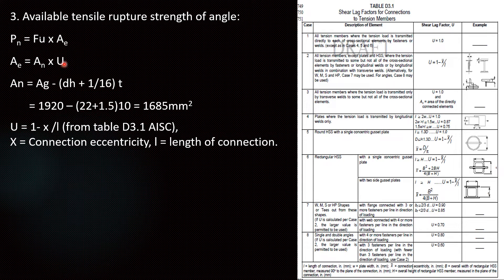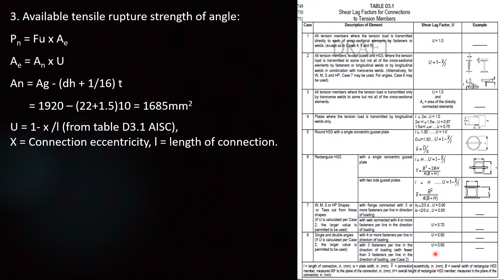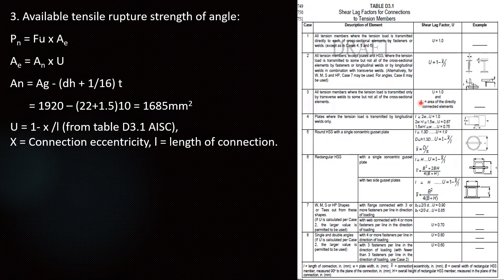Then we have to calculate the U value. U value we have to calculate based on table D3.1. For each member this U shear lag factor is given here separately. In our case you can see these images. Case 1 is for all tension members where the tension load is transmitted directly to each cross section. Case 2 is applicable for I sections, T sections or L angle. So our case is L angle. We can take the formula from here. For each HSS and everything they give separate formula for each member.